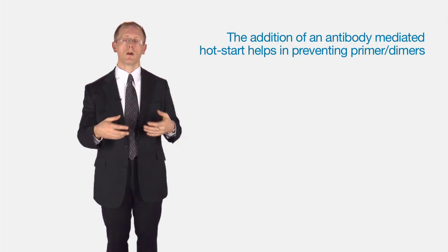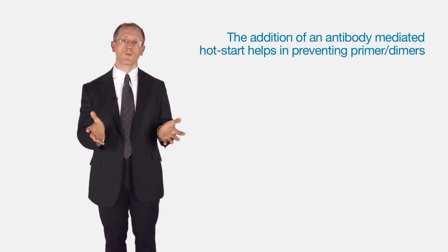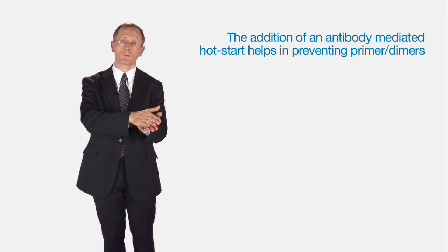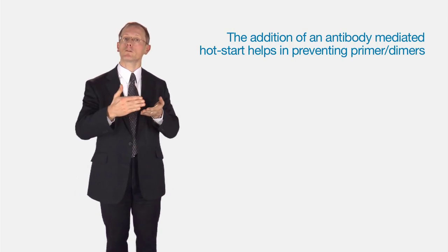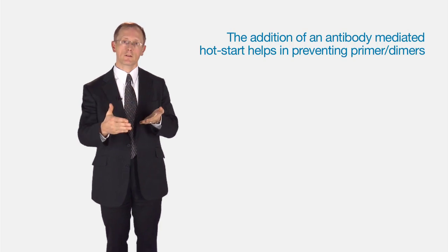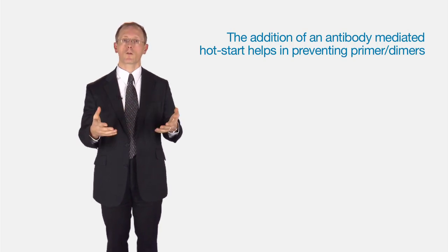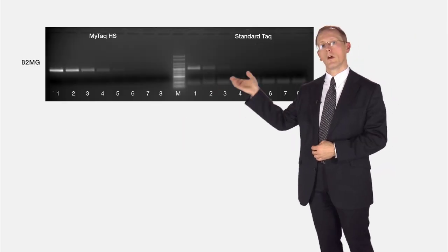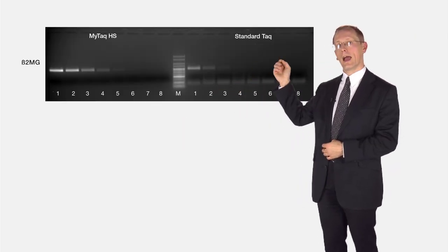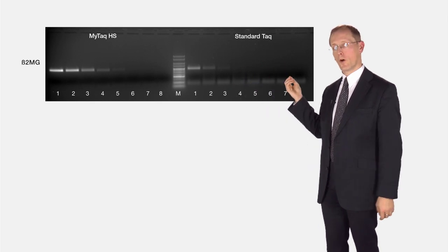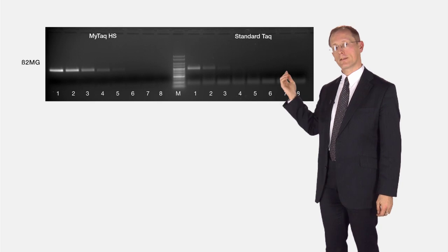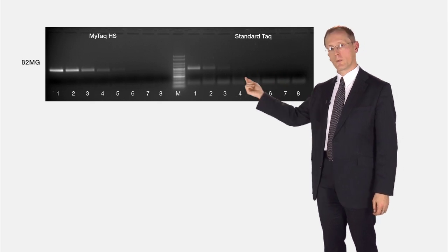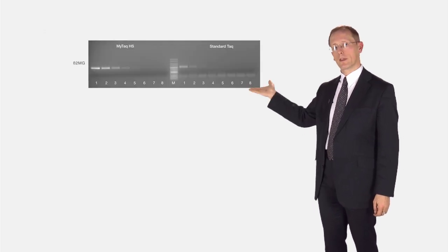What are primer dimers? Primer dimers are where, at low temperatures, the primers bind to each other. If the polymerase is working at these low temperatures, you can get extension, and the primers no longer recognize the correct places. You can see in this example the standard polymerase shows a fuzzy band below, which is the primer dimers giving poorer yields.